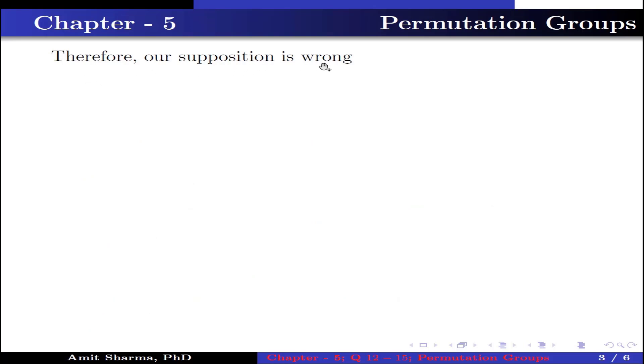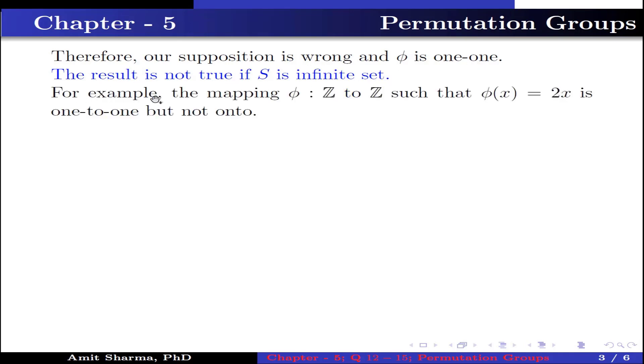Therefore, our supposition is wrong and φ is one-to-one. The result is not true if S is infinite set. For example, the mapping φ: Z → Z such that φ(x) = 2x is one-to-one but not onto. Why? Because the image of φ cannot be equal to Z.